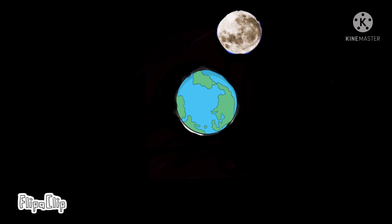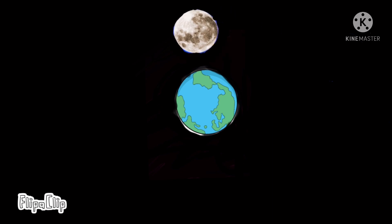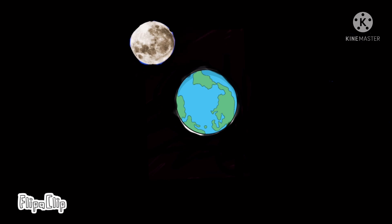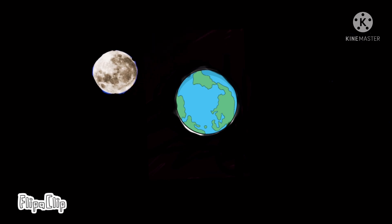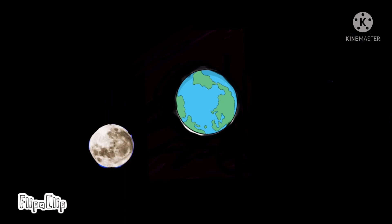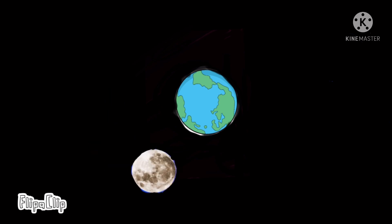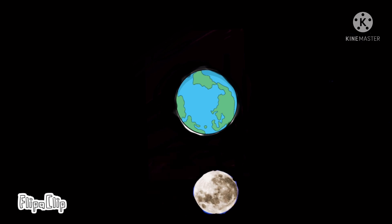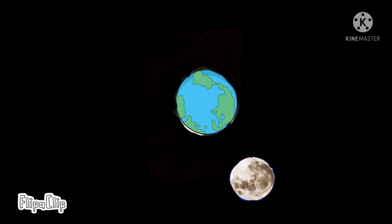It takes 27.3 days to complete its rotation. Even though it looks like a perfect circle, it is shaped like a lemon. The moon makes the earth as well as the tides move.